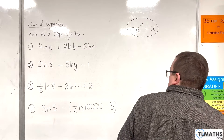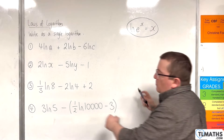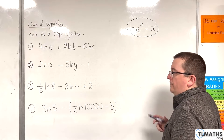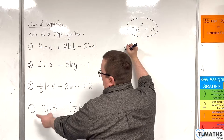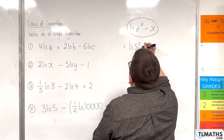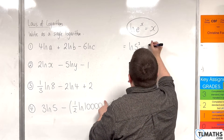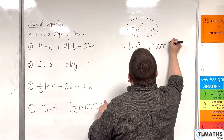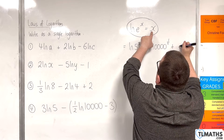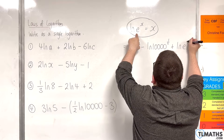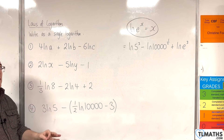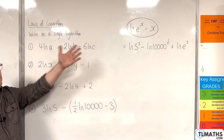For the last example, we have 3 times the natural log of 5, take away the bracket containing 1 half times the natural log of 10,000 take away 3, close bracket. Dealing with powers first: we have the natural log of 5 cubed. Then multiplying through by the minus sign and bringing the half up to the power gives take away the natural log of 10,000 to the power of 1 half. The take away minus 3 becomes plus 3, which using the rule with x equal to 3 becomes plus the natural log of e cubed.